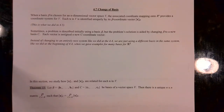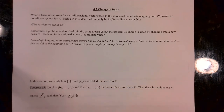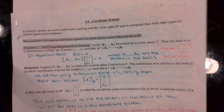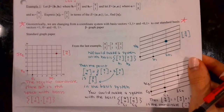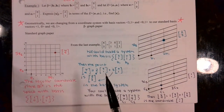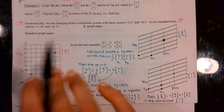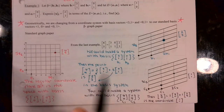Section 4.7 is going to tie in closely to what we did back in 4.4. I want to go back to 4.4 and do a little recap before we start diving into change of basis in 4.7. What we did in 4.4 is we defined what a basis was. The basis we've been using to create all of our coordinates up until now is the standard basis. We're going to focus on R2 today just to keep it simple.